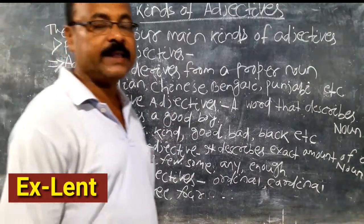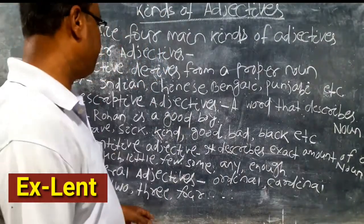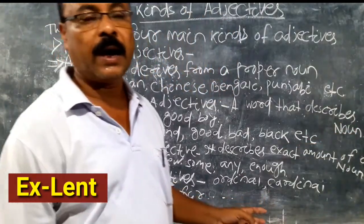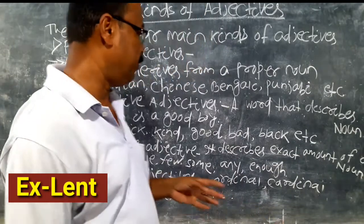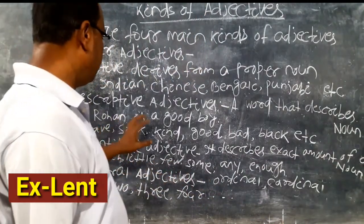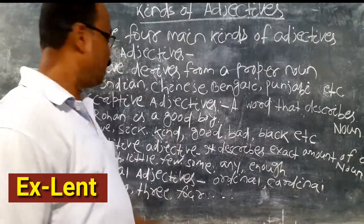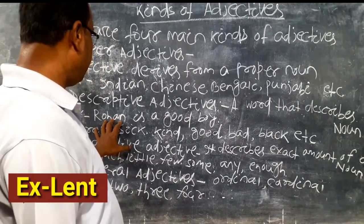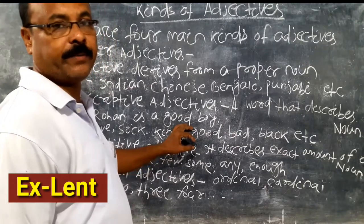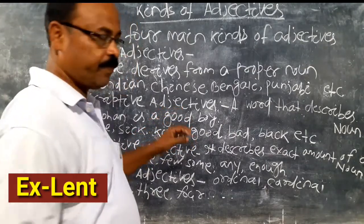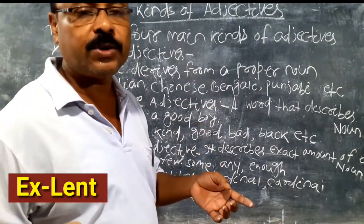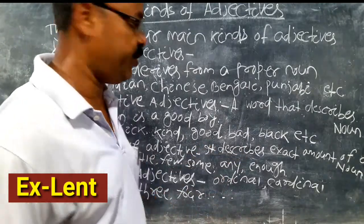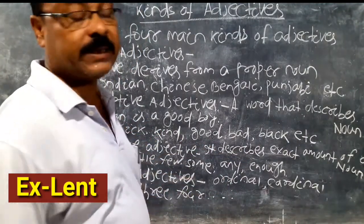Number two: descriptive adjectives. A descriptive adjective is a word that describes a noun. For example, 'Rohan is a good boy.' Here, Rohan is the noun, and 'good' is the adjective. The word 'good' describes what kind of boy Rohan is — what type the noun is. So this is an example of a descriptive adjective.